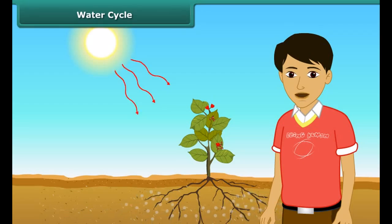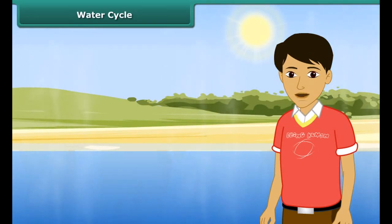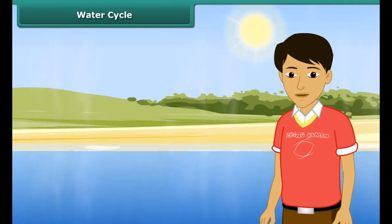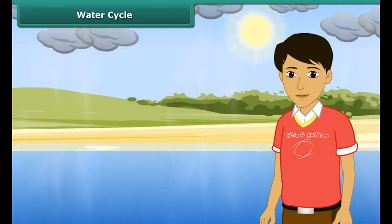The process of plants releasing water vapor is called transpiration. The water vapor rises up in the air, cools, and turns into tiny water droplets. These droplets come together to form clouds. This process is called condensation.